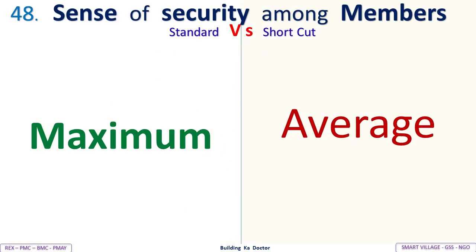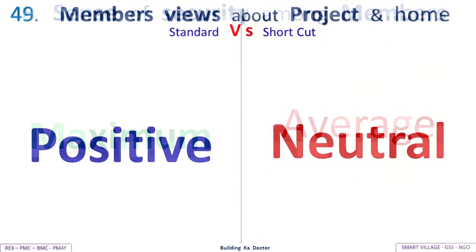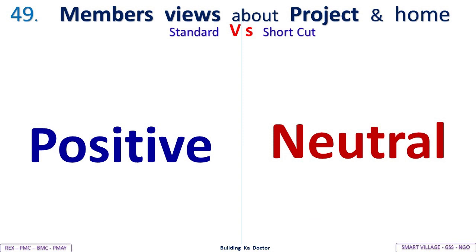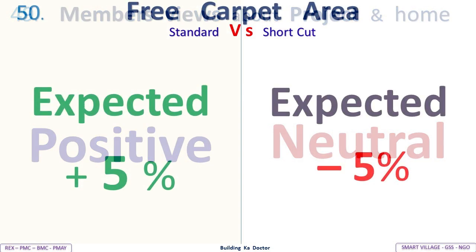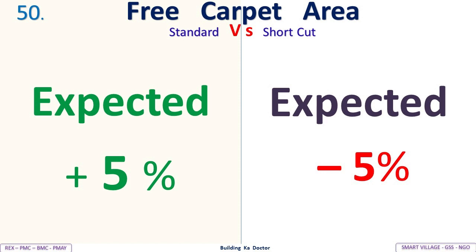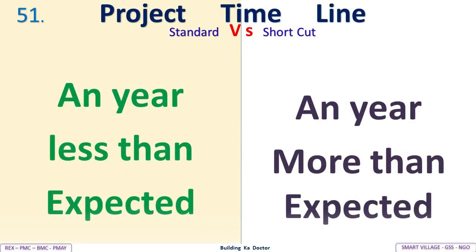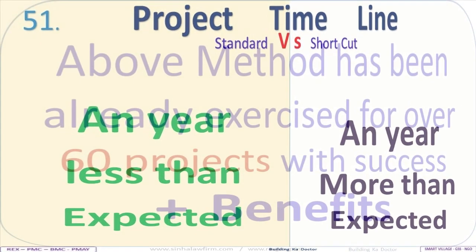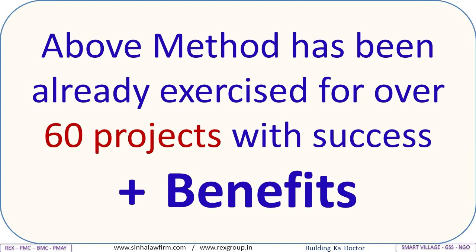Sense of security among members: Standard — maximum; shortcut — average. Members' views about project and home: Standard — positive; shortcut — neutral. Free carpet area: Standard — expected plus 5%; shortcut — expected minus 5%. Project timeline: Standard — on or within expected timeline; shortcut — beyond expected. This method has been already exercised for over 60 projects with success and benefits.